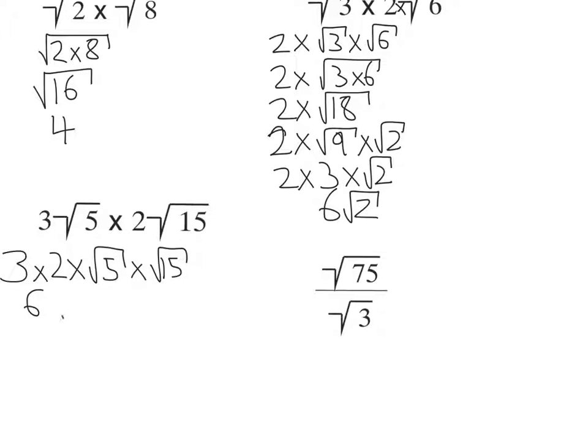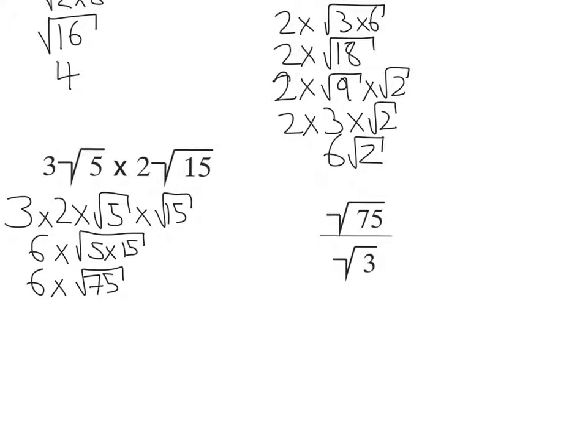Root 5 times root 15 is then going to be 5 times 15. And now we can do the multiplying under my square root, which will become root 75. And again, I can see if there's a square number that divides into 75.